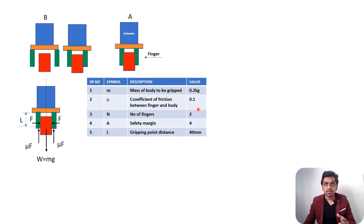We have two number of fingers. We're considering a safety margin of 4, and the gripping point distance L is 40 mm. These are my system inputs.